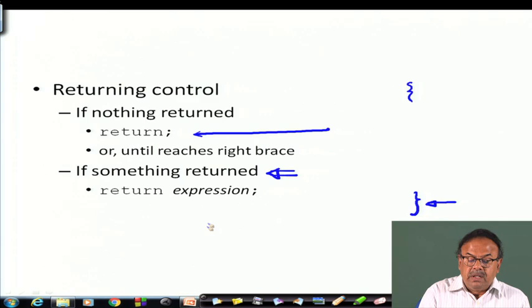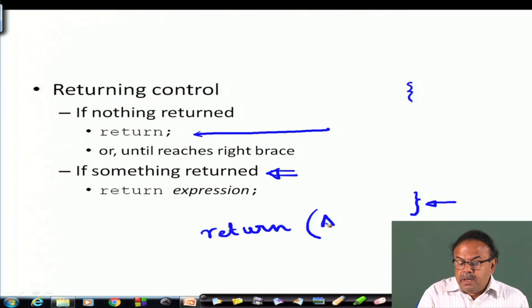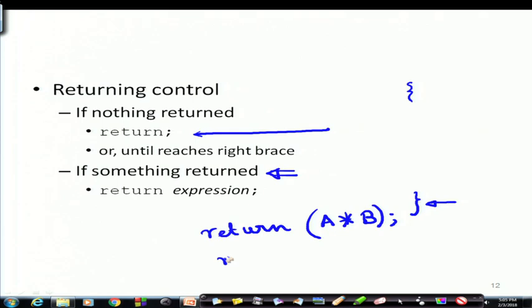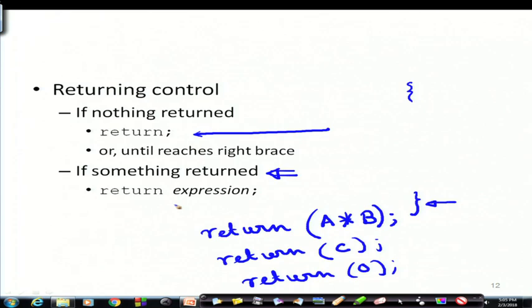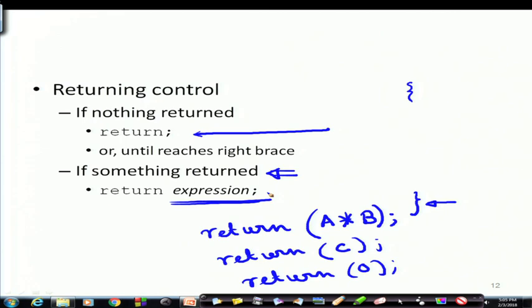But if something is to be returned, we must put the return statement with an expression — for example, return a times b, or return c, or return 0, or return 1, whatever is needed. An expression automatically captures constants as well.